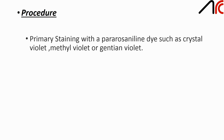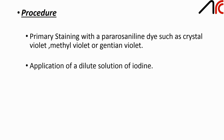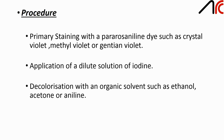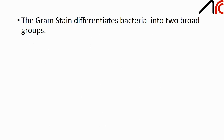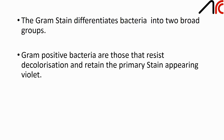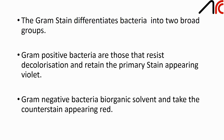Now the procedure for gram staining. The primary staining is done with pararosaniline dye such as crystal violet, methyl violet and gentian violet. It is diluted with a solution of iodine. Decolorization is done with an organic solvent such as ethanol, acetone and aniline. Counter staining with a dye of contrasting color is used, such as safranin and neutral red. Gram positive bacteria are those that resist decolorization and retain the primary stain, appearing violet. Gram negative bacteria are decolorized by organic solvent and therefore take the counterstain and appear red.